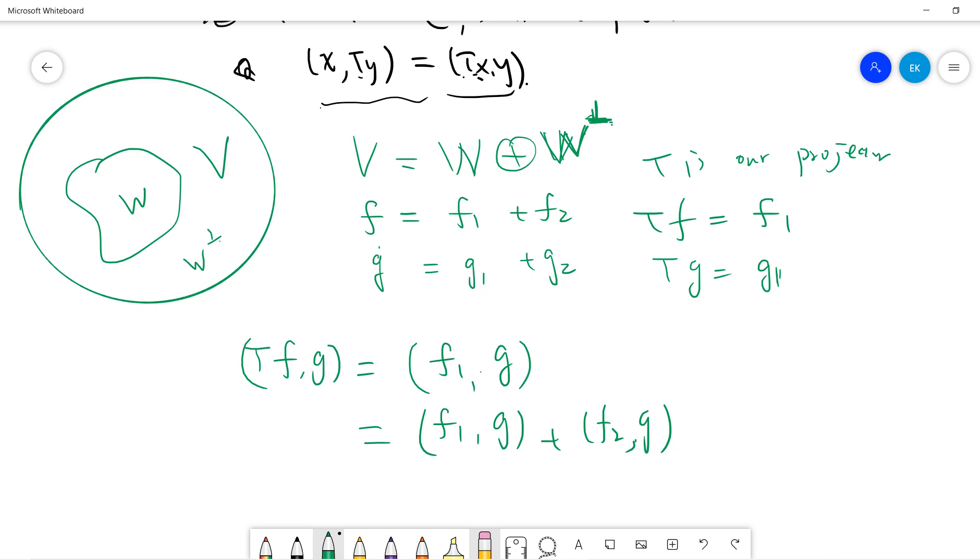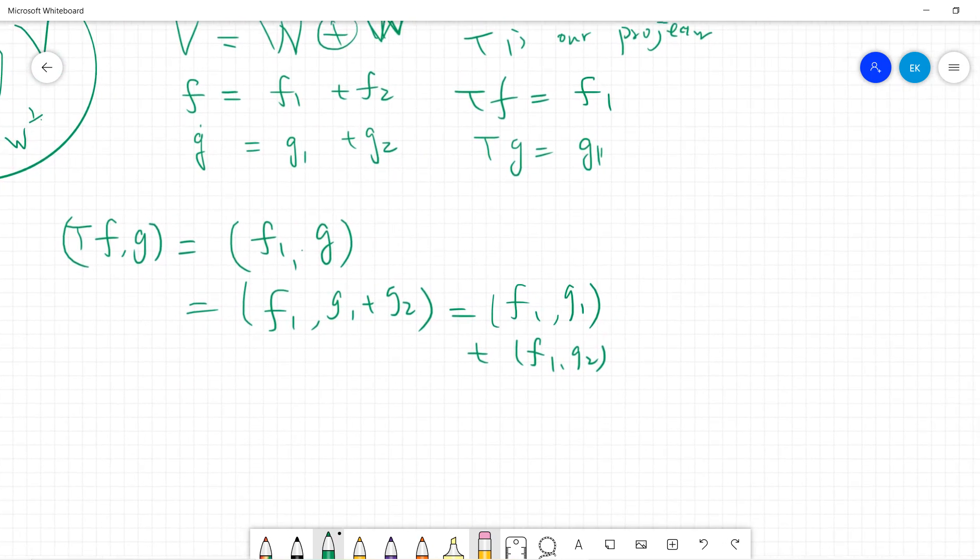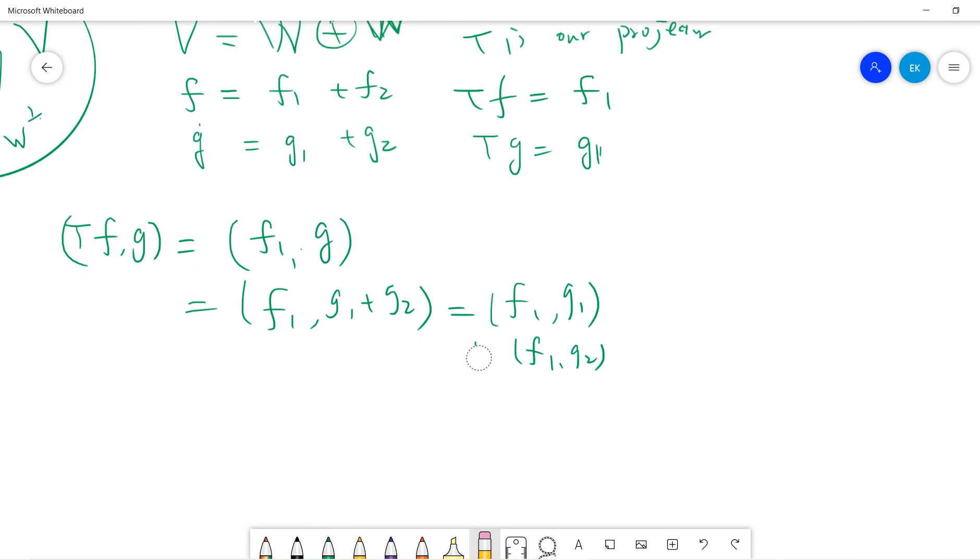So this is not a good way. But we can write it as ⟨f₁, g₁ + g₂⟩. And so ⟨f₁, g₁⟩ is something we don't know. But ⟨f₁, g₂⟩ is zero, right? Because g₂ is in W complement and f₁ is in W. So we can kill out this term.